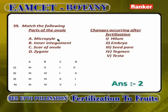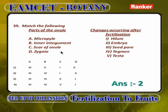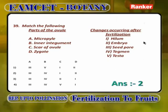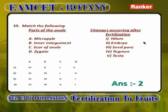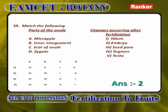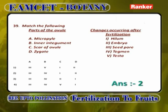Ovule parts and their changes after fertilization: Micropyle becomes seed pore (A is 3); inner integument becomes tegmen (B is 4); scar of the ovule is hilum (C is 1); zygote develops into embryo (D is 2). Answer: A3, B4, C1, D2.